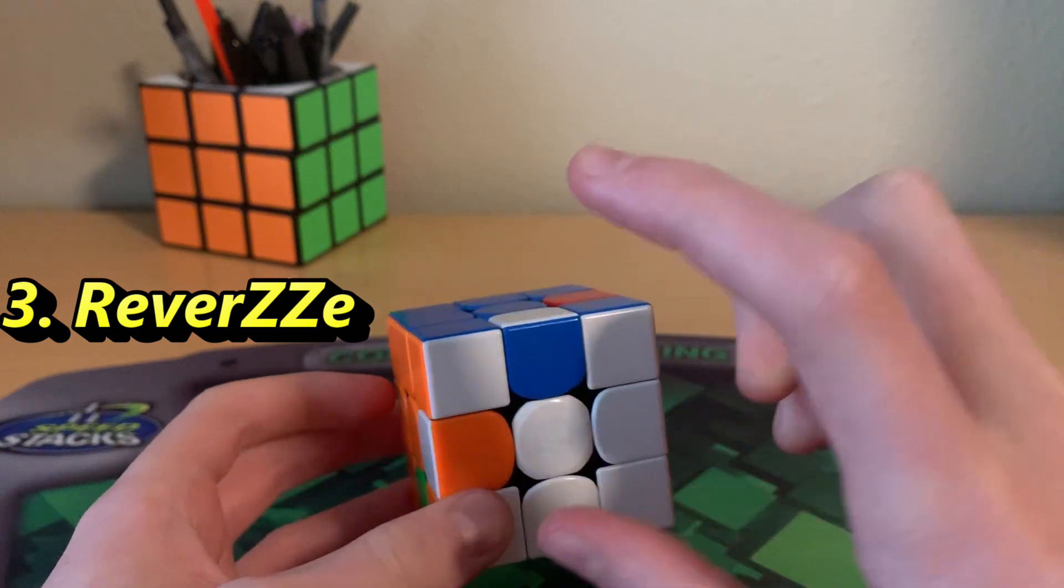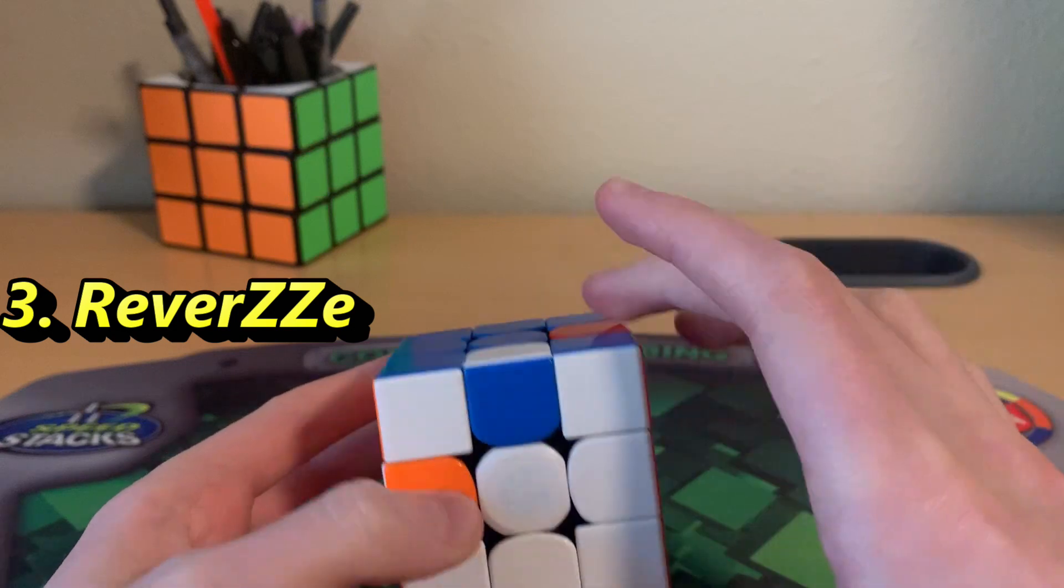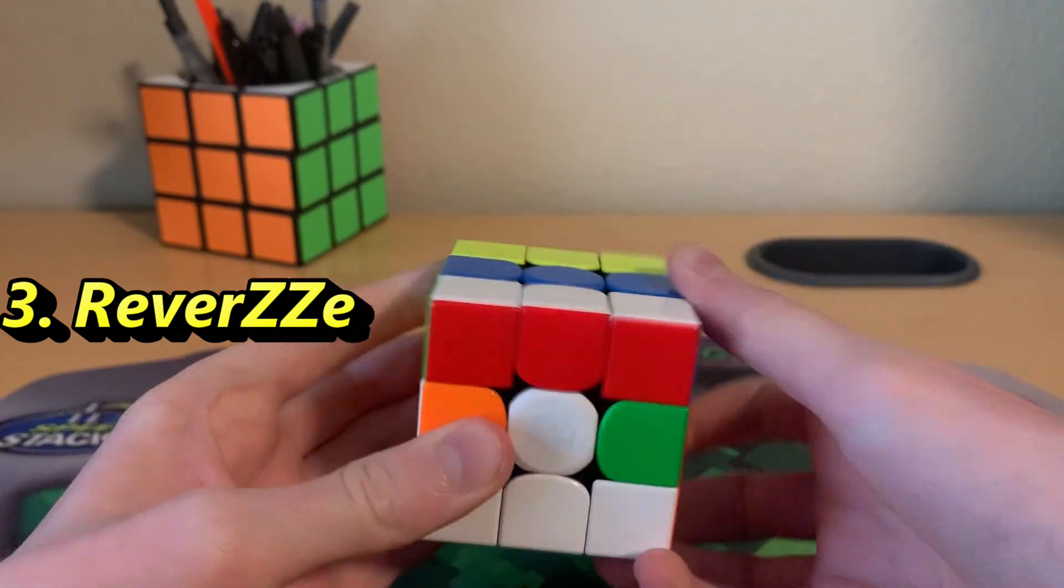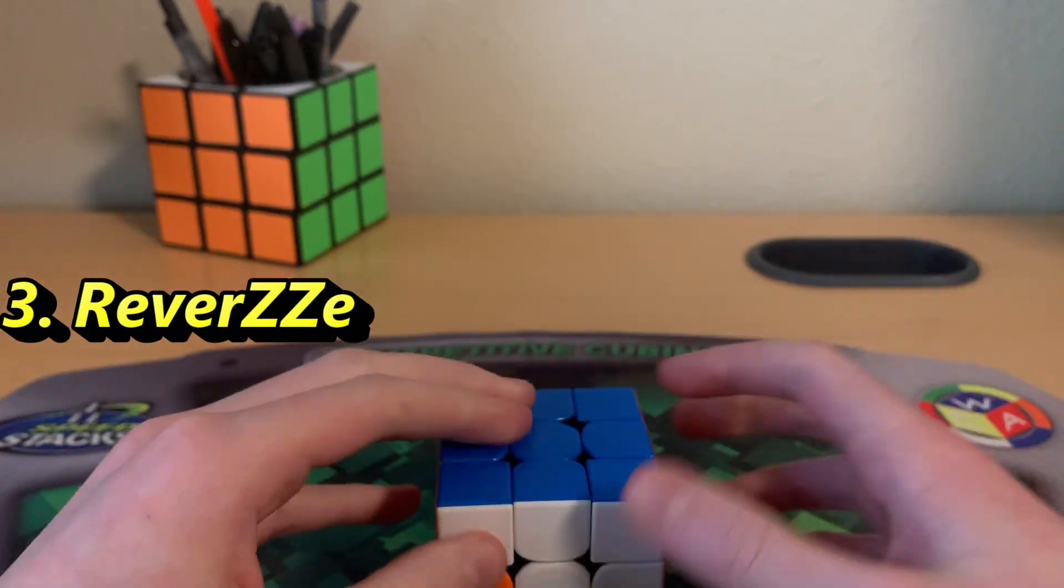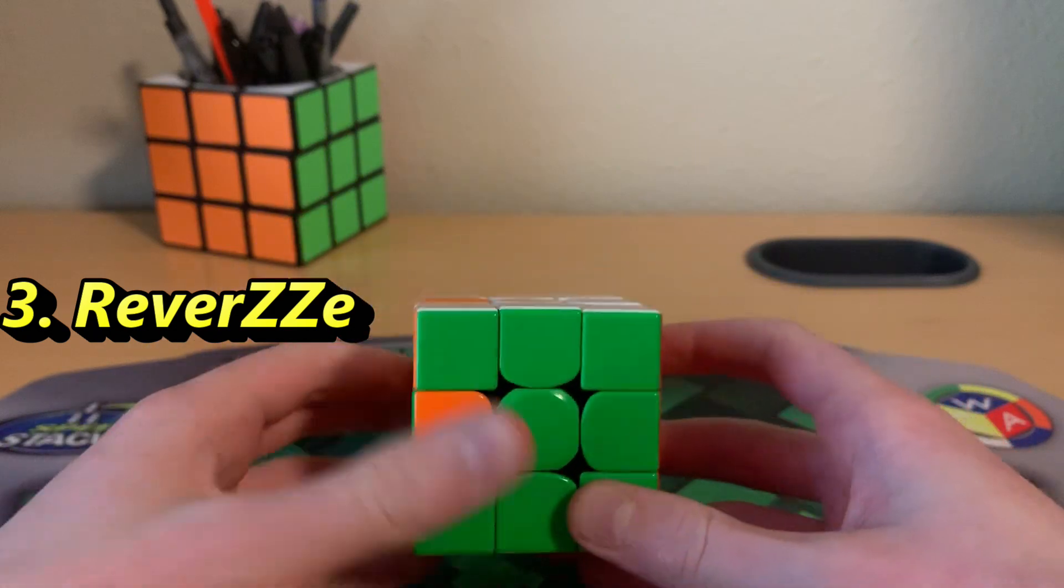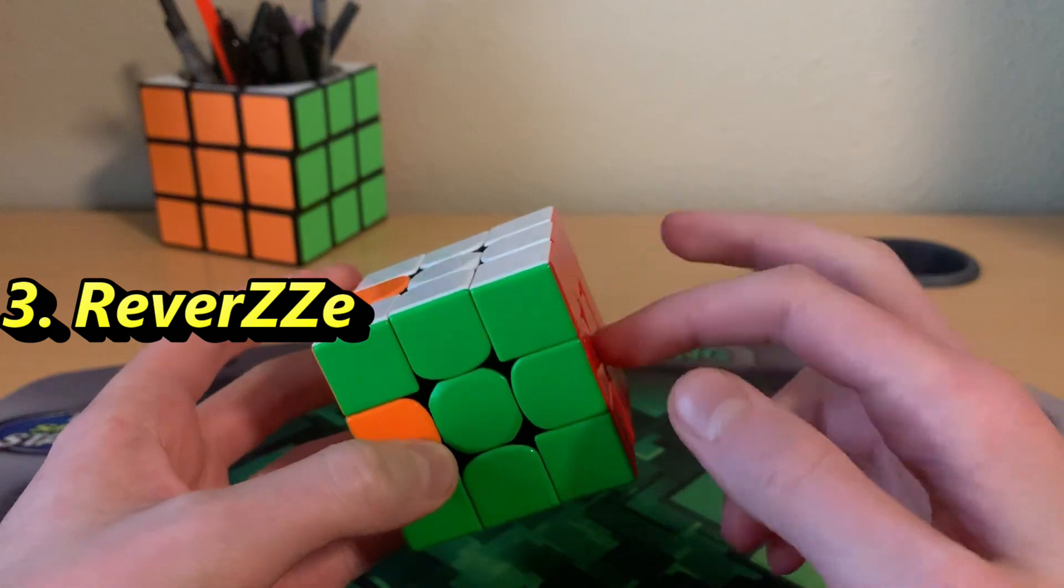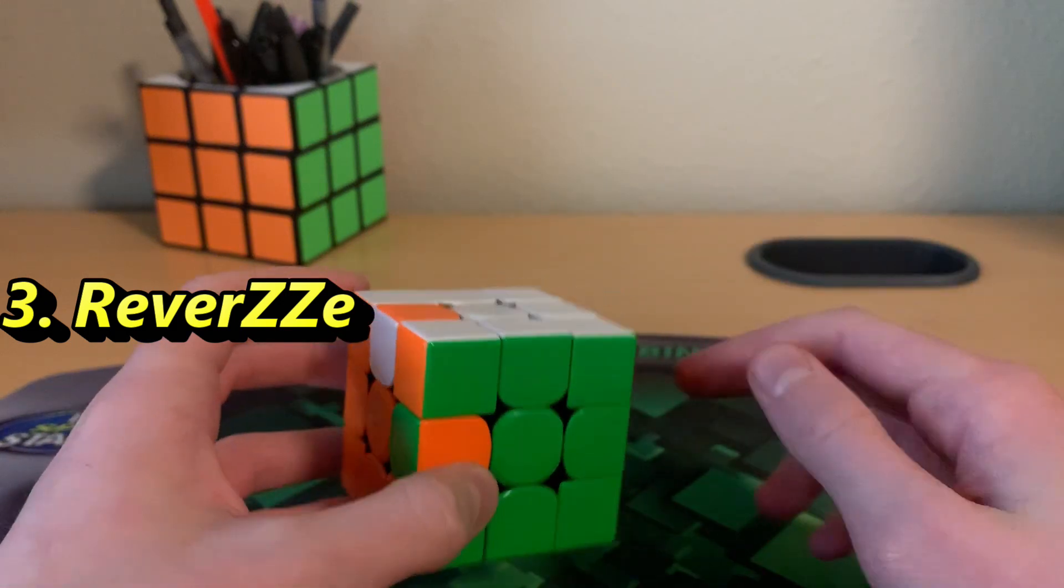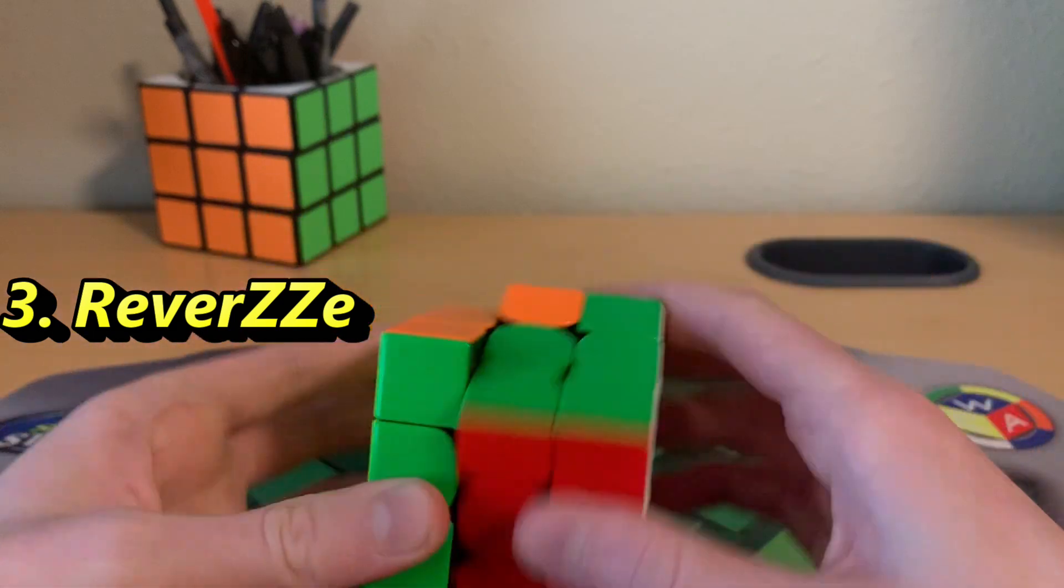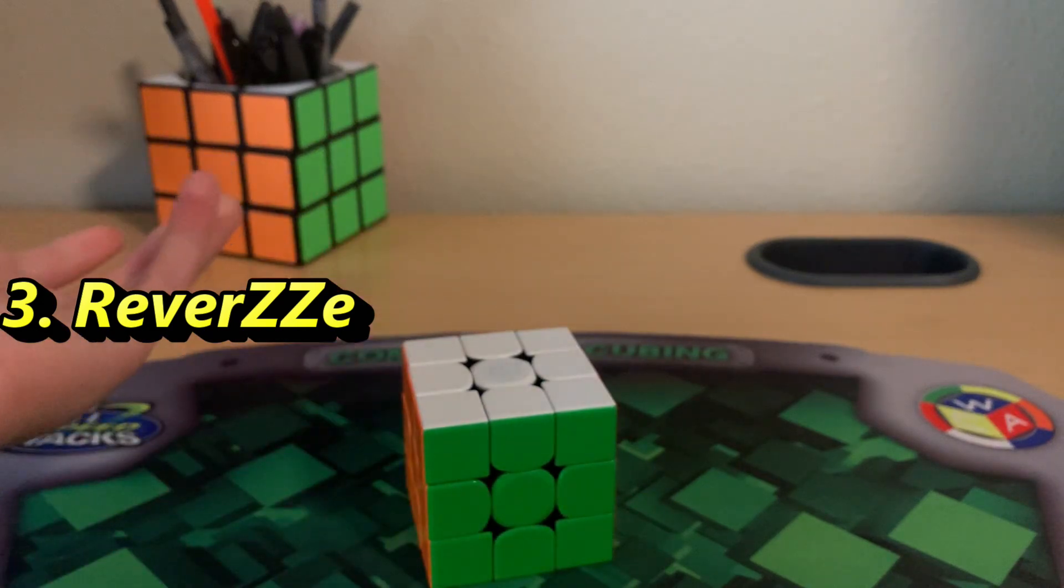And now we need to solve the EO line. So if you have just one solved, find one that you can flip with it and then do that flipping algorithm. And that should solve your line. And once you have the line, the last step would be EO. So orient the edges. So you could have, in the worst case scenario, all six of these edges unoriented. That would be a shame. But here I just have these two left, so I flip those. And that's the reverse of the ZZ method.